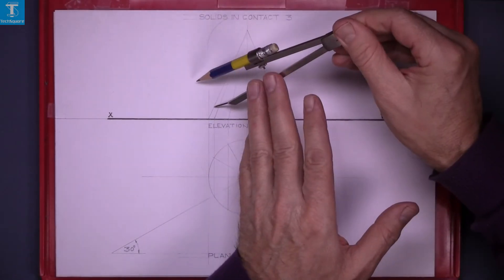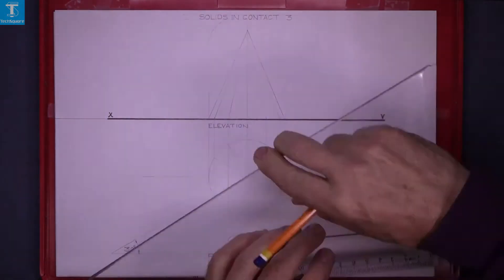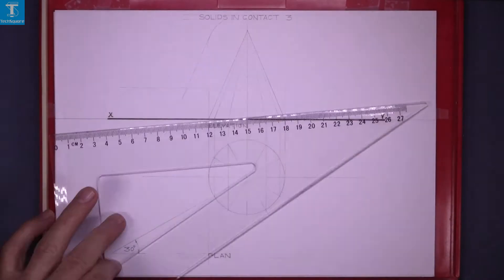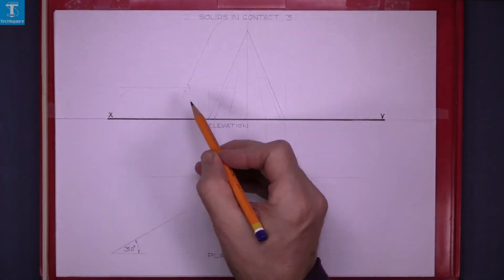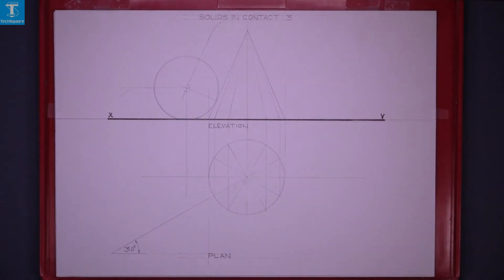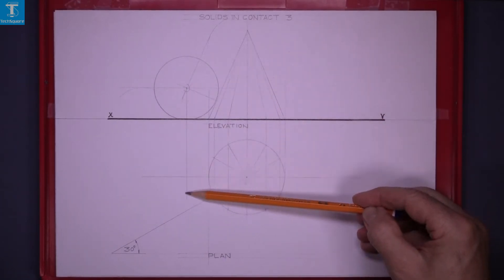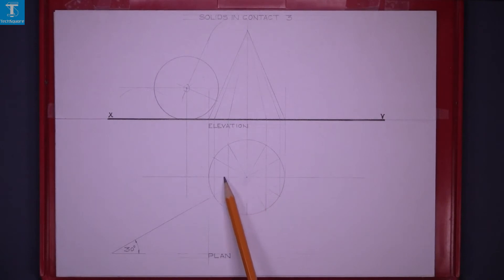Find the centre for the sphere as we have done in Solids in contact 1. Find the points of contact and then draw the elevation. Project down and draw horizontally from the plan and that gets the centre for the plan.